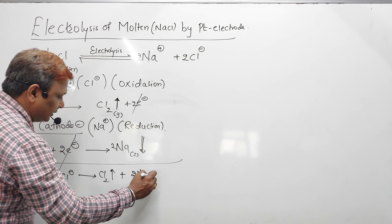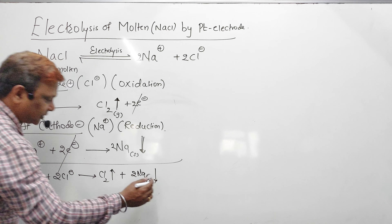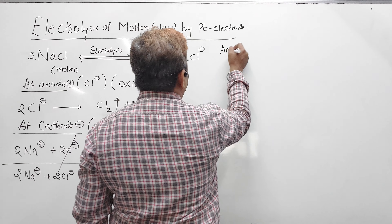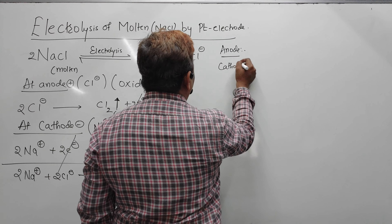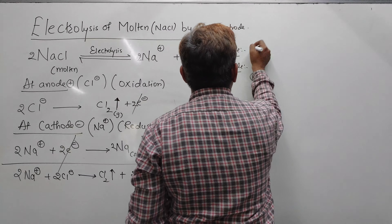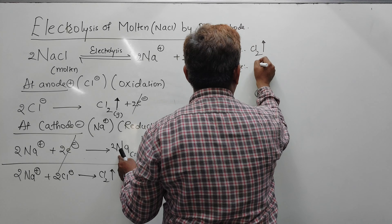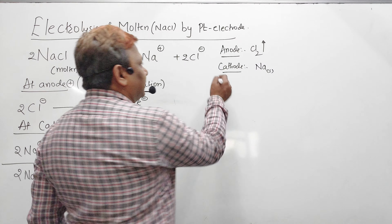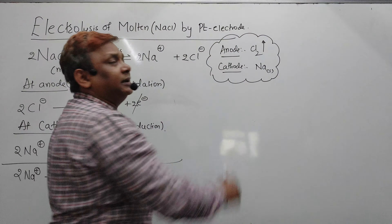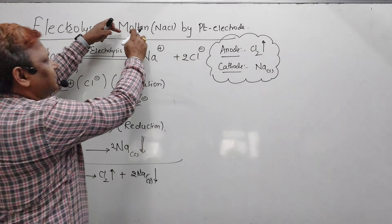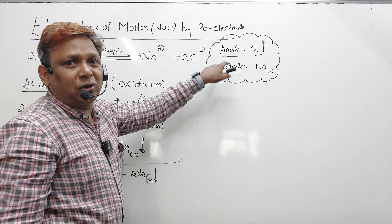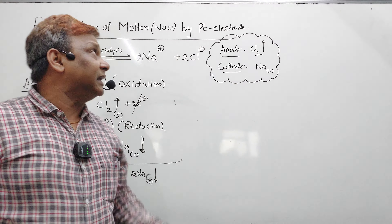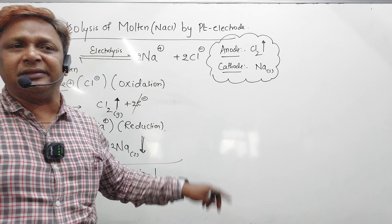Combining both half-reactions, the 2 electrons cancel: 2 Na plus + 2 Cl minus → Cl2 (gas) + 2 Na (solid). So chlorine gas is liberated at the anode and sodium metal is deposited at the cathode. This is the net cell reaction for electrolysis of molten NaCl with a platinum electrode. Next we will look at electrolysis of aqueous NaCl with a platinum electrode.